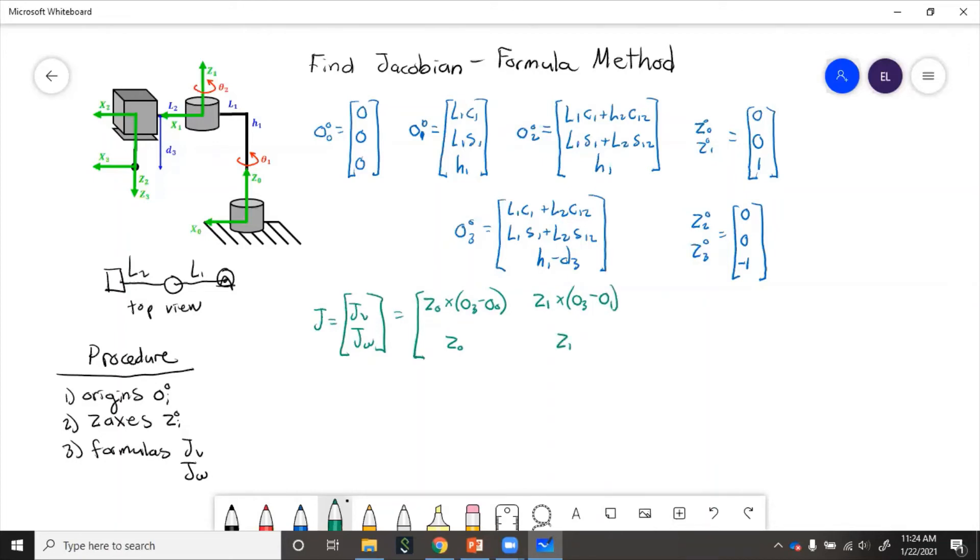Now for the third joint, this is prismatic. So the jv is just going to be the z vector, zi minus one, which for the third joint would be z2. And then it has no angular motion, so zero.